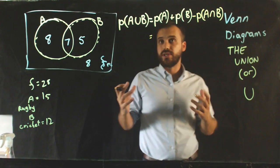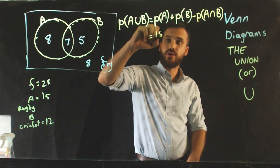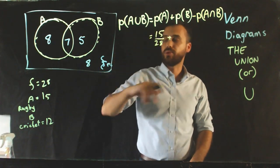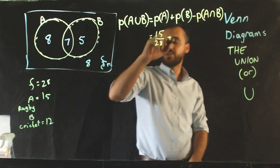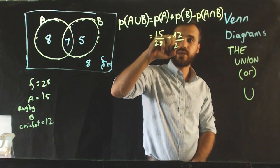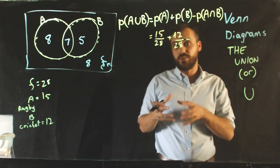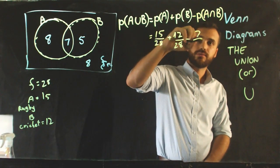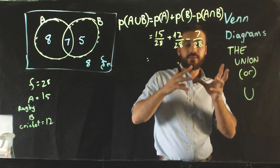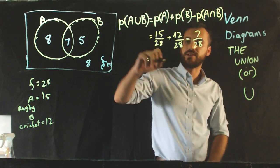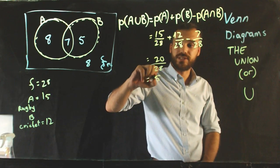Okay, so when you add those together and subtract that, you get the probability of A is all of this, 15 over 28. The probability of B is all of that, 12 over 28, minus the probability of our intersection, because we don't want to count it twice. When you add those together and subtract that, you get 20 over 28, which is 5 over 7.